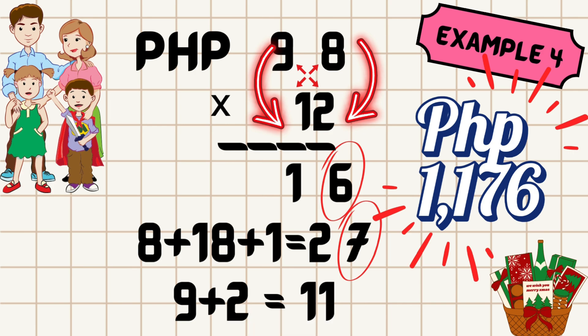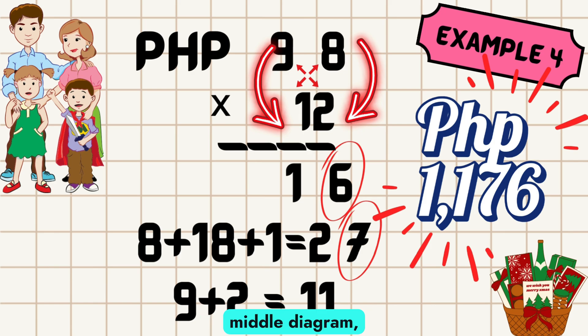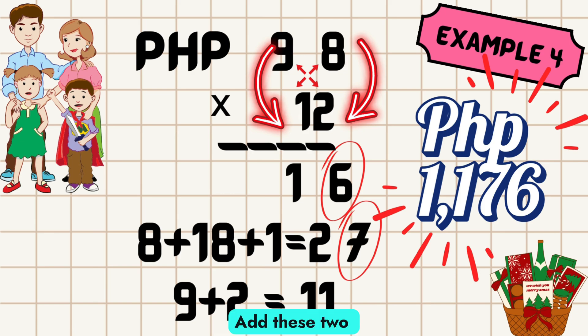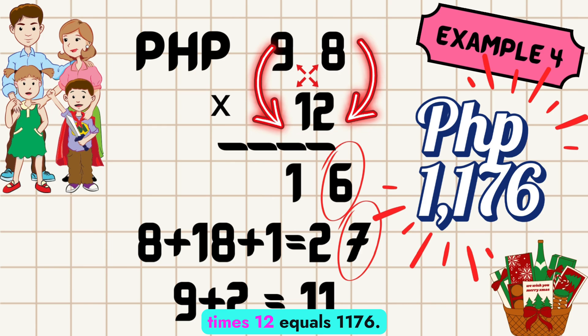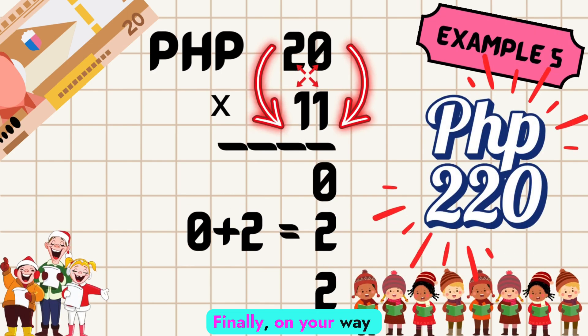Let's start from right to left: multiply 8 times 2, which equals 16. Write the 6 as the last digit and carry 1. Now following the middle diagram, multiply 8 times 1 and 9 times 2, which equals 8 and 18. Add these two together, then add the carry 1, and the sum is 27. Write 7 as the next digit and carry 2. Now let's move to the left column: 9 times 1 equals 9, plus the carry 2, which equals 11. So the answer to 98 times 12 equals 1,176.